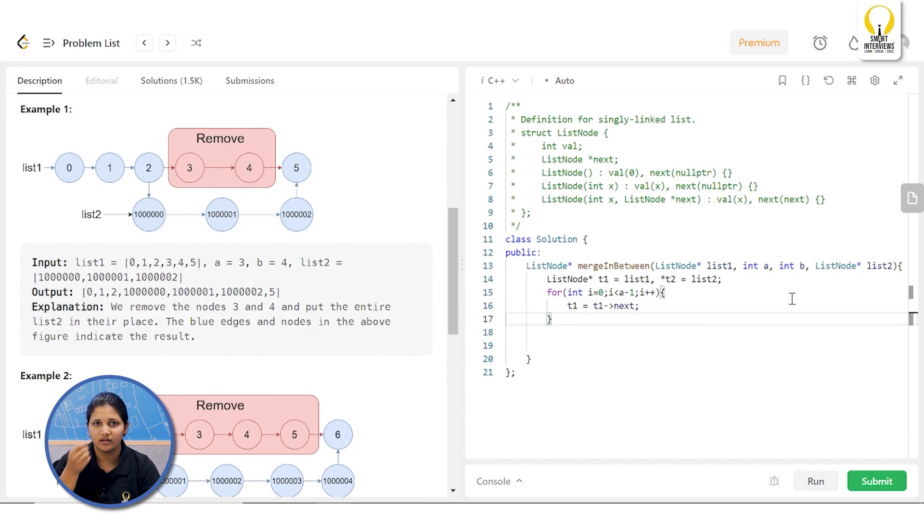Now, you are going to jump how many steps? A minus one number of steps. In which list? List one. So, I will use my temporary pointer T1. T1 equals to T1 next. Now, this will help you stop at your 2. So, let us name that as beginning. This is your T1. You got your beginning. In the same way, we need to get our ending pointer. We'll do how many steps? B number of steps. So, i from 0 and i less than b. This time, let us move up T2. T2 equals to T2 next. Let us name this as ending en and this is T2. You got your beginning and ending.